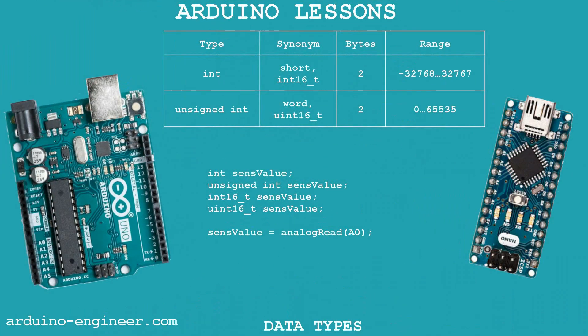Int and unsigned int are the most popular integer types. They cover a large range of integers but take up twice as much memory as the byte type. An int variable takes up to 16 bits. Unsigned int is the same type, only without a sign – it covers only positive values. These two types are well suited for storing the read value of an analog input, for example.